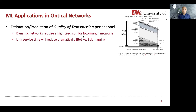Machine learning is definitely a very hot topic in optical networks. One of the applications is to estimate or predict the quality of transmission per channel or for an unestablished channel. This application arises from the requirement to make the network more dynamic — link service time will reduce dramatically, requiring higher precision for quality of transmission and to achieve low-margin networks. Machine learning definitely plays a role for quality of transmission prediction.